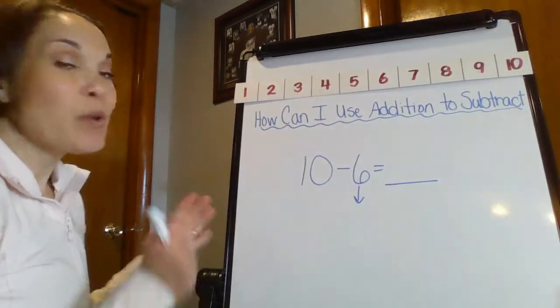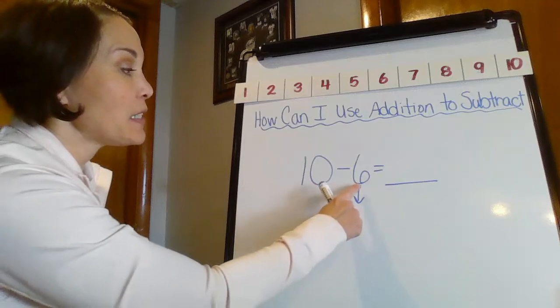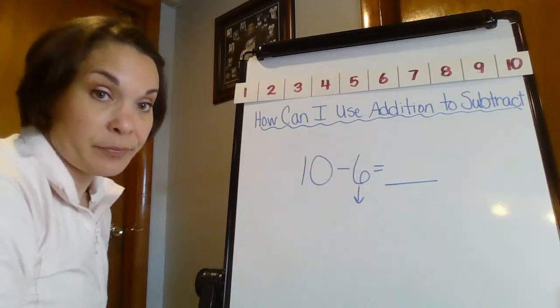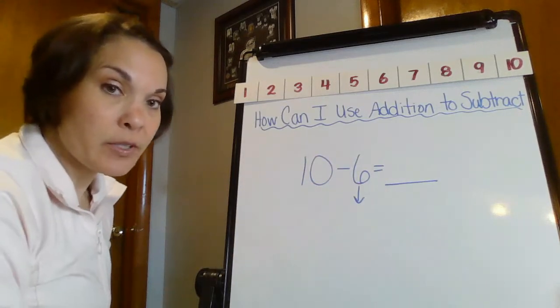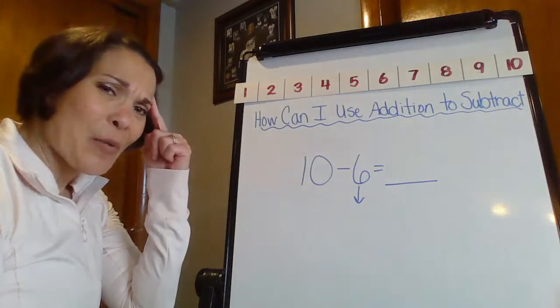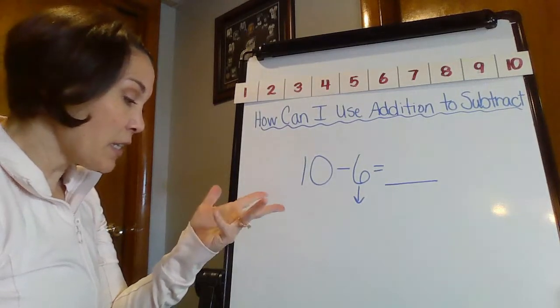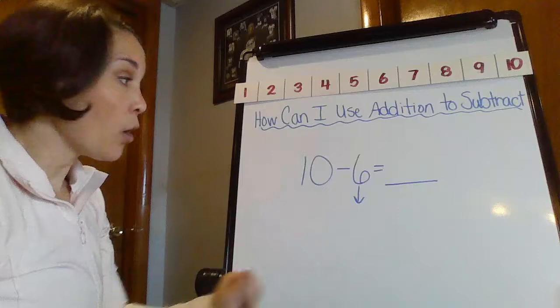Okay, and we're back. So now I have a new number sentence: 10 minus 6 equals what? Alright. Well, let's use some of those subtraction strategies that we have. So I'm going to put 10 in my brain and I'm going to count back 6: 10, 9, 8, 7, 6, 5, 4. Okay, well we got 4.